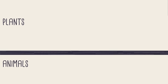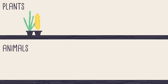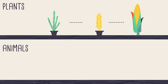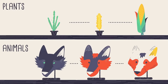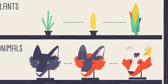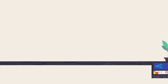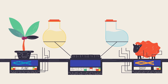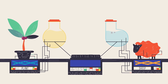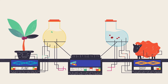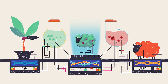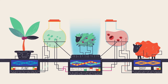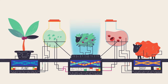Humans have been artificially altering the genomes of plants and animals for thousands of years by selective breeding. Today, with advances in genetic engineering techniques, we can speed this process up by incorporating specific new genes from one species into a completely unrelated species.